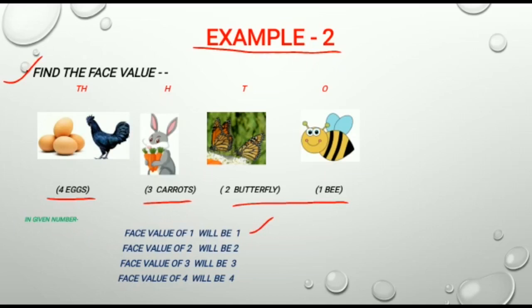The place value of 2 will be 2. The place value of 3 will be 3. And the face value of 4 will be 4. As we know, the face value never changes according to the places.